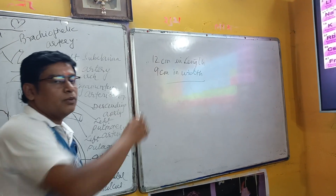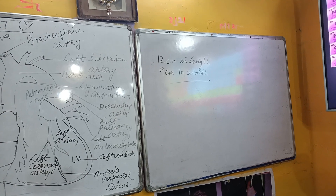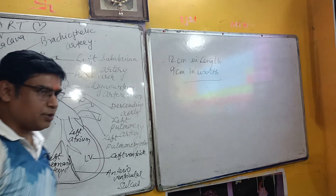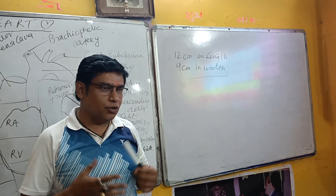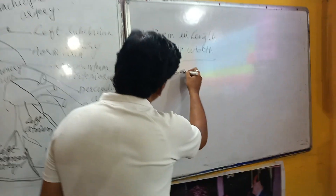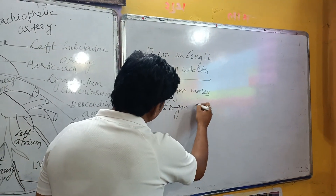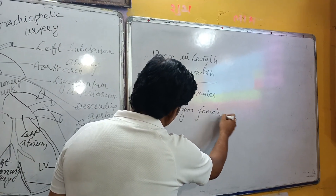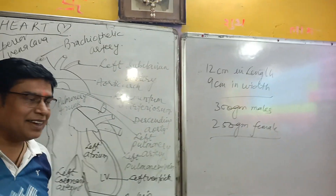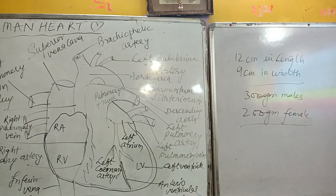The weight of the human heart is on average 300 grams in males and 250 grams in females.